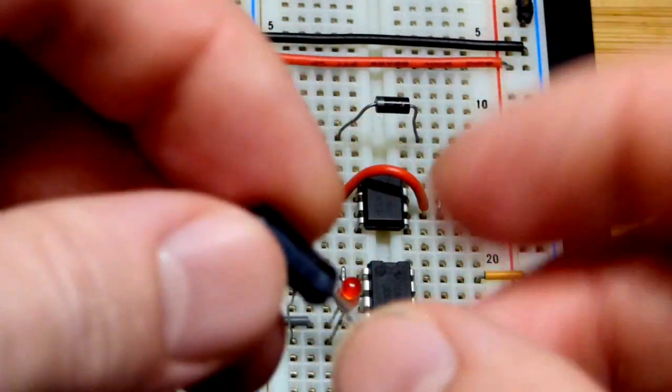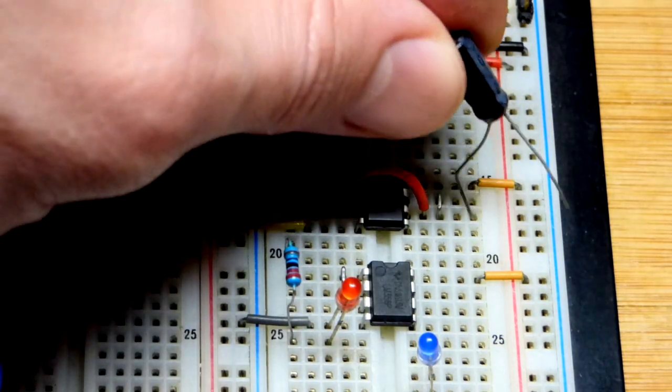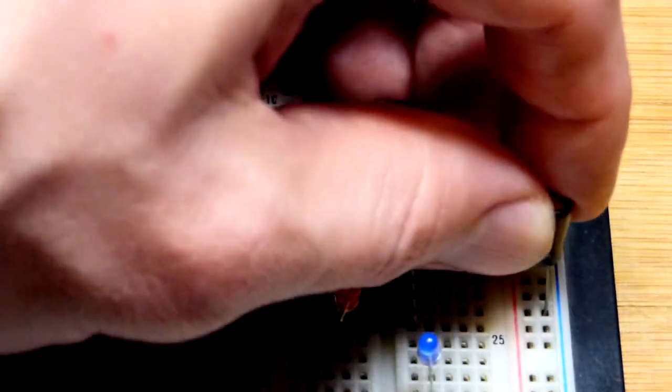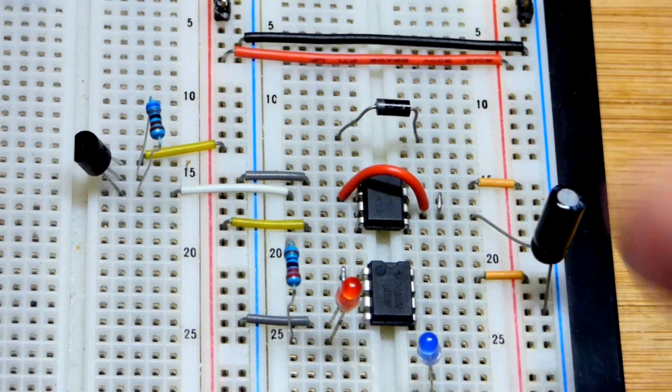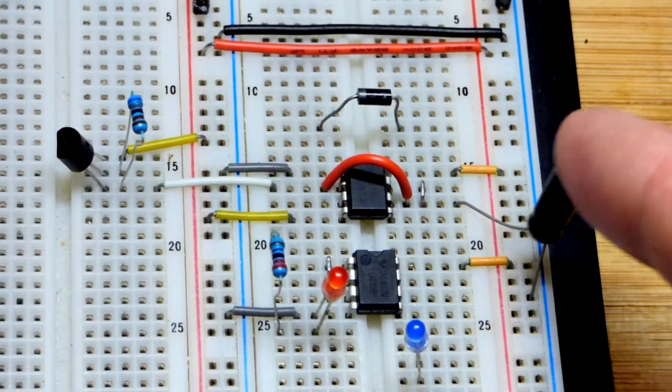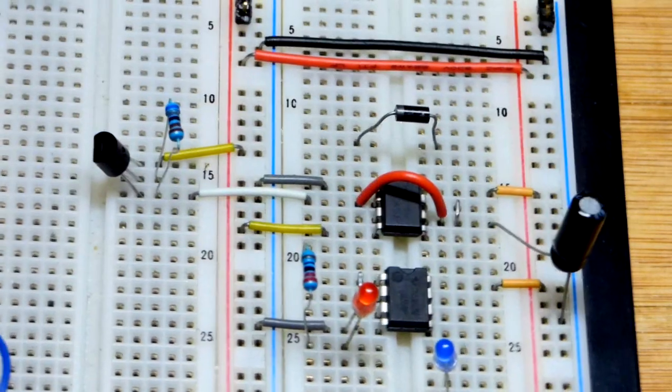This is a 10 microfarad capacitor. That's the negative side with the gray dash, and that's got to be charged more negative, or else you could destroy the component. Some of them, if you destroy them bad enough, they explode. But we're good to go now, it's in the right direction.